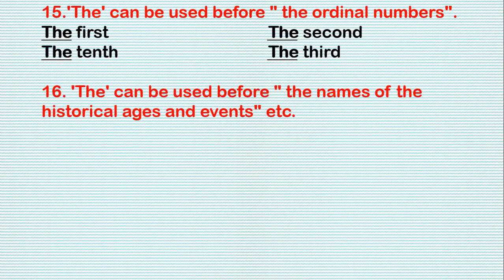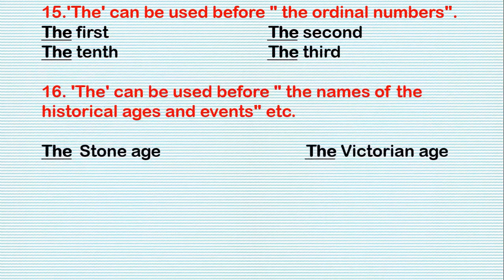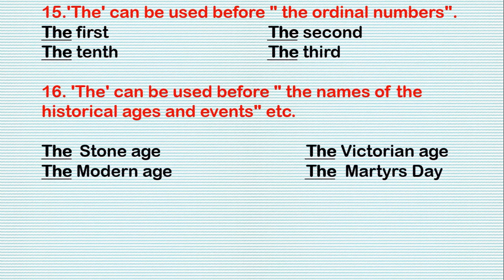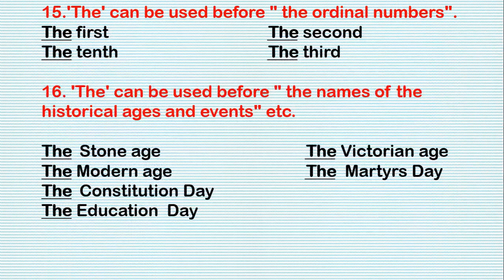Rule 16: 'The' can be used before the names of historical ages and events. For example: the Stone Age, the Victorian Age, the Modern Age, the Martyr's Day, the Constitution Day, the Education Day, the Republican Day, etc.